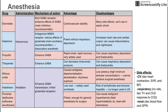Let's begin with etomidate, which is an intravenous anesthetic. The mechanism of action for etomidate is that it binds the GABA receptor. The GABA receptor then enhances the effects of the GABA neurotransmitter. We're enhancing the effects of a main inhibitory neurotransmitter, so if we're enhancing the inhibitory neurotransmitter, we might have anesthetic effects.